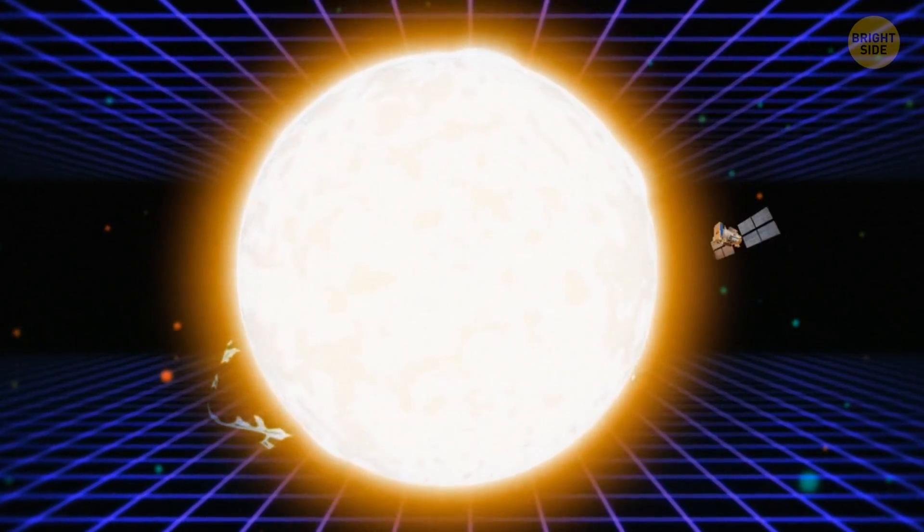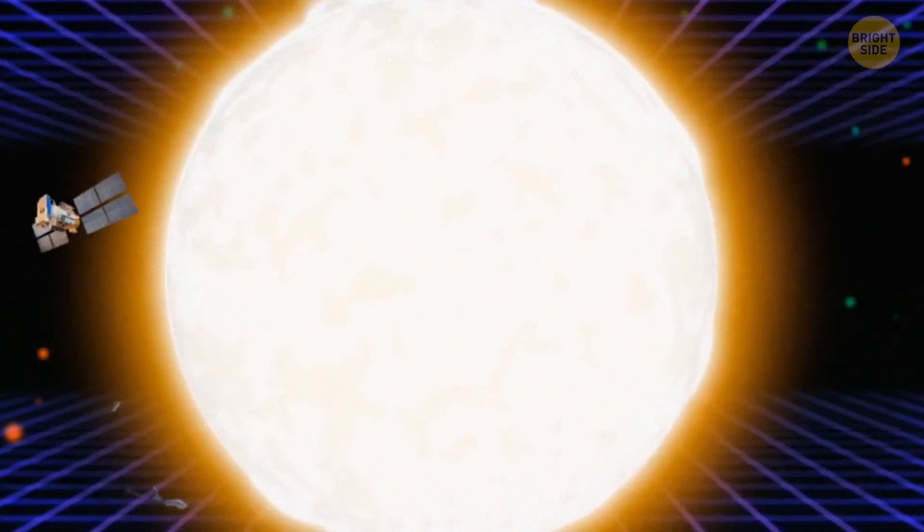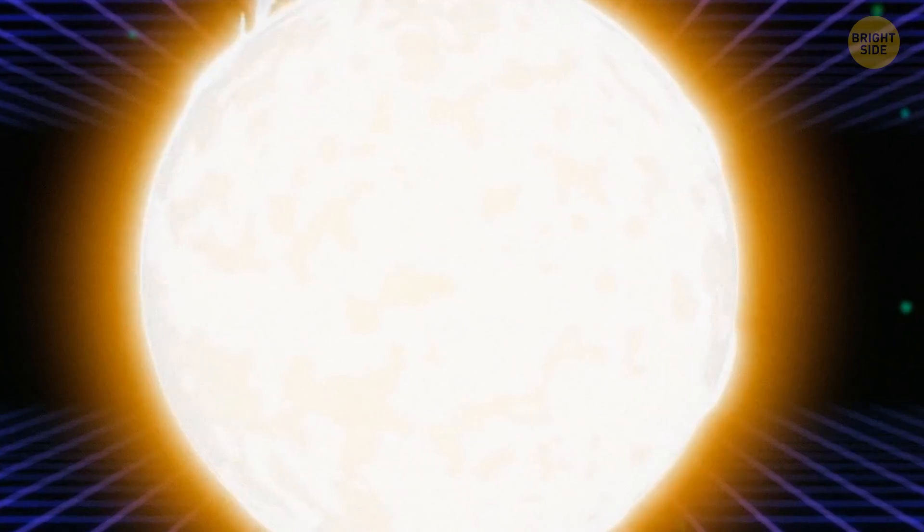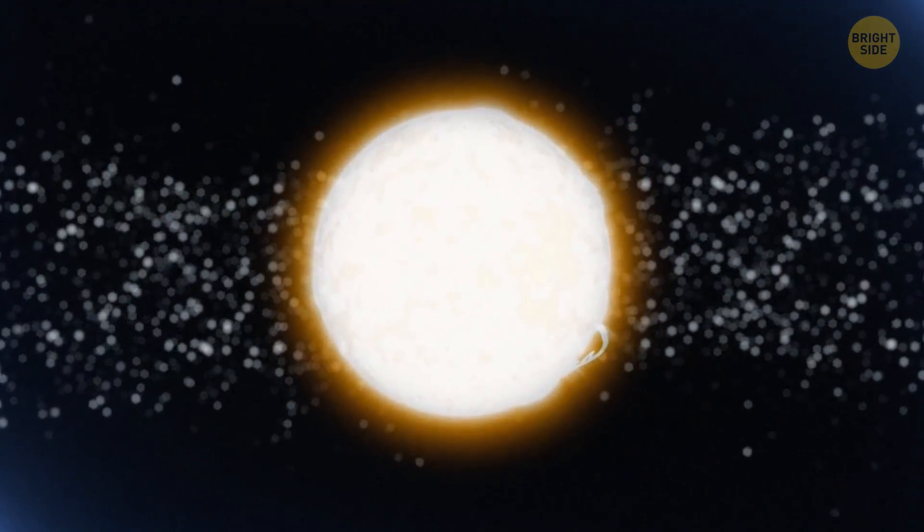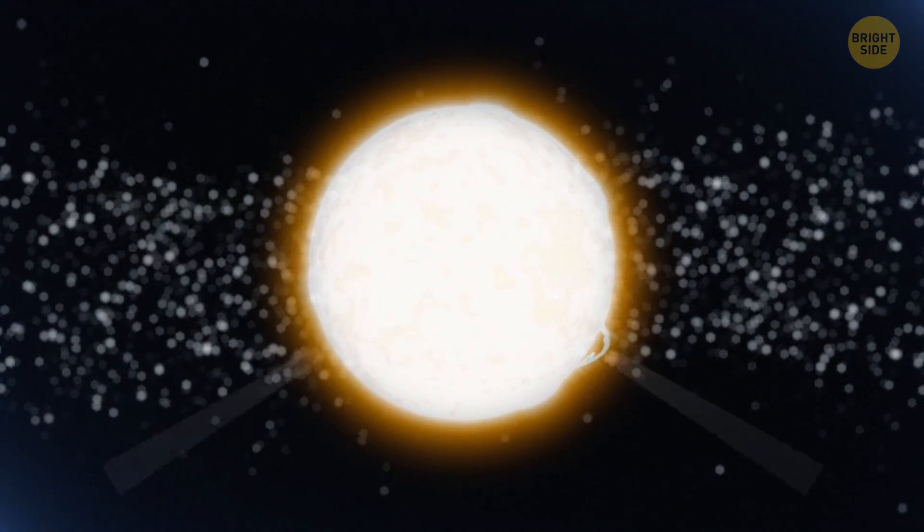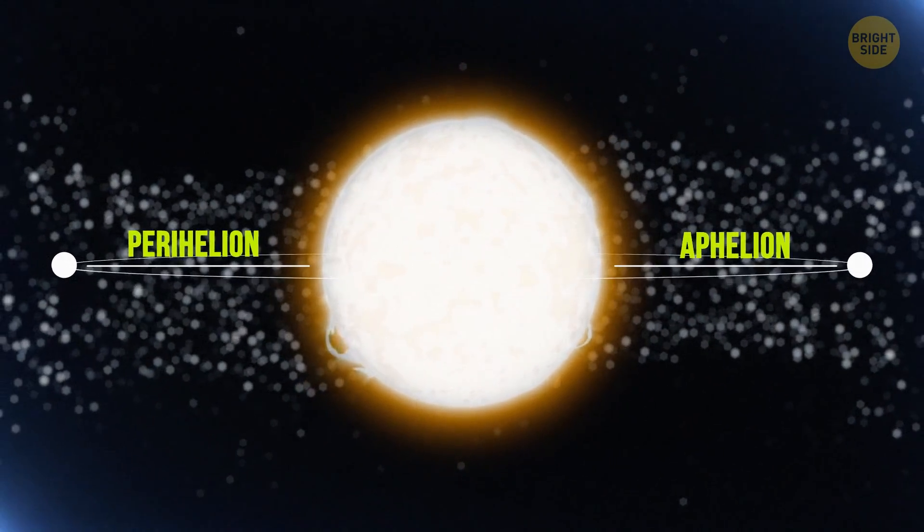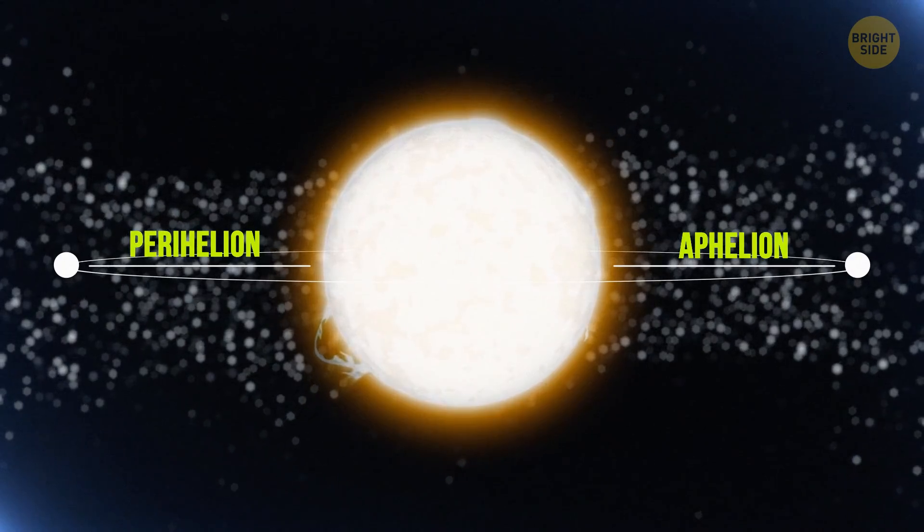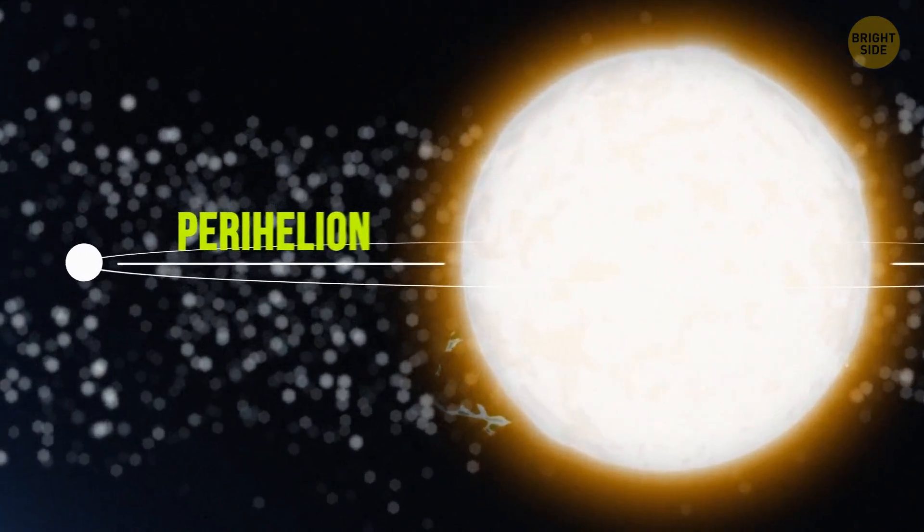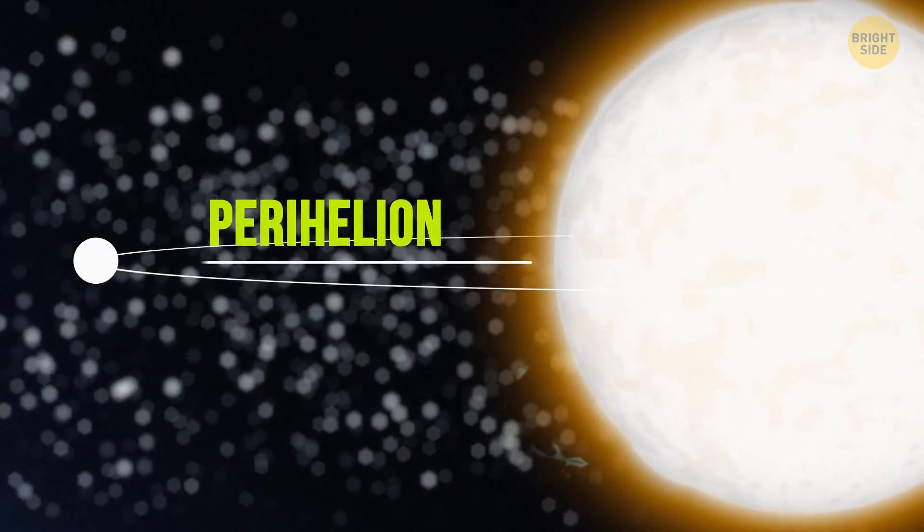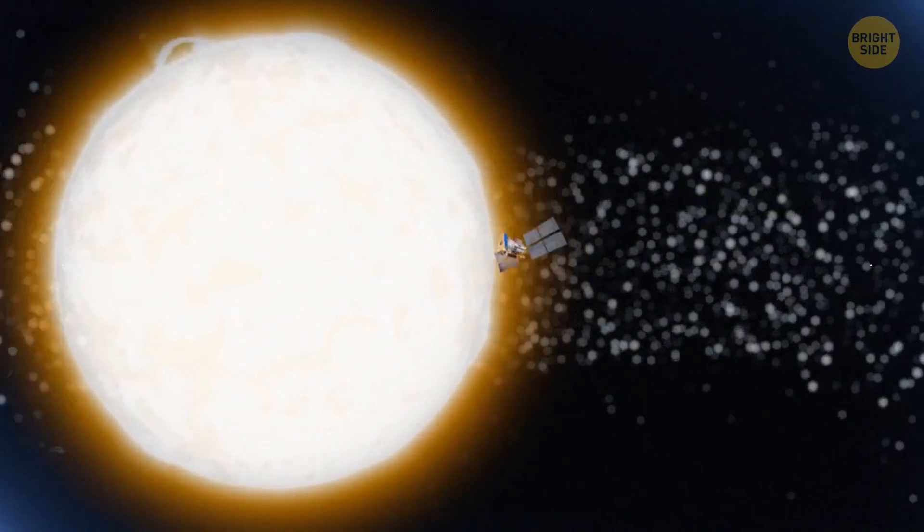It'll give the probe an incredible amount of acceleration with each flyby. The Parker Solar Probe was constantly moving between two points. Those were the perihelion and aphelion. Here's the sun, and here's the probe's orbit in the shape of an ellipse. The closest point to the sun is the perihelion. The sun was pulling the probe there at an incredible speed.